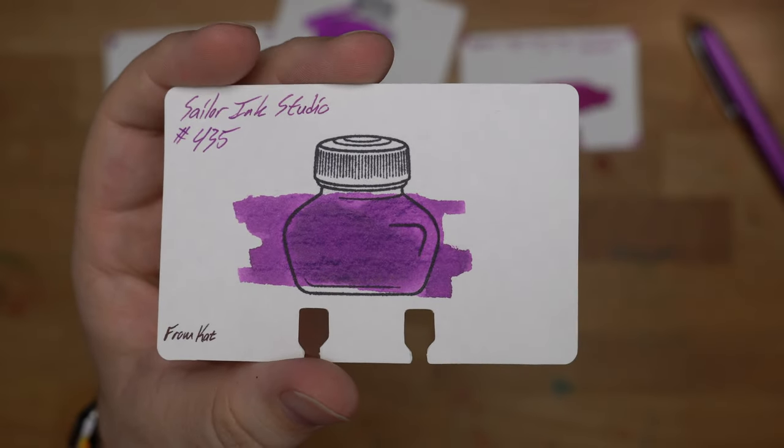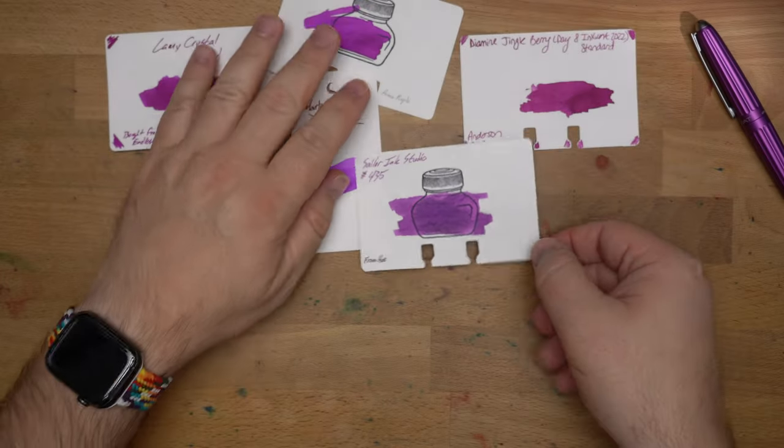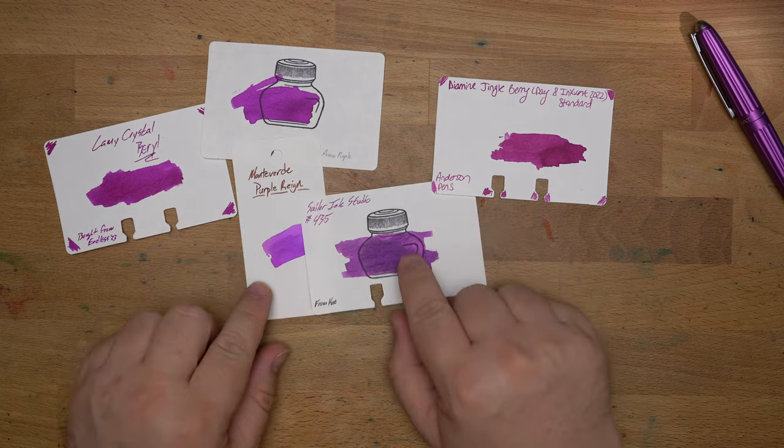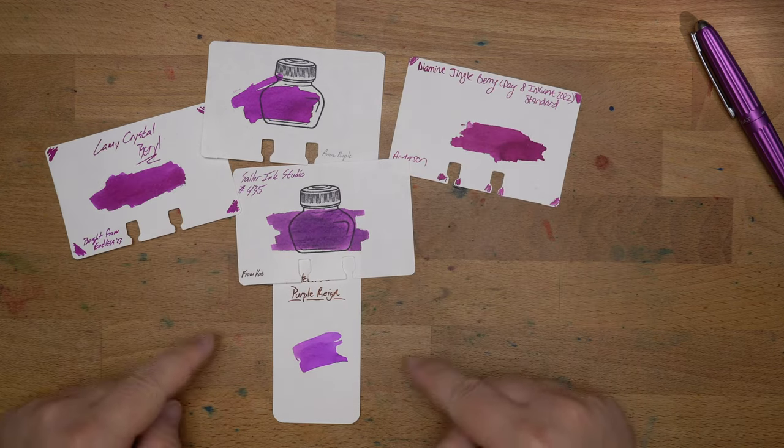And then lastly, Sailor Ink Studios, number 435, a darker pinkish purple, but also like a totally different color from all the rest of these, right? It's kind of a half step in between this range of pinkish purple and down to this one.